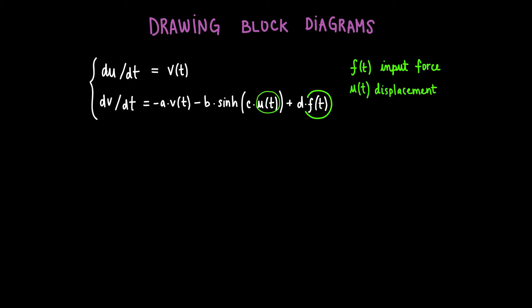U as a function of t represents the displacement or deflection of the system, and V as a function of t represents the speed of the system. Meanwhile, a, b, c, and d are constant parameters in the system.